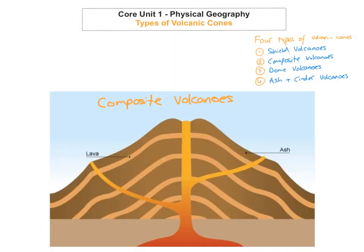The next one we're gonna look at is the composite cone — composite volcanoes. There are a few different features for composite volcanoes. The first one is that they have alternating layers of ash and cinder and lava. You can see here the cinder and ash layer, then the lava layer, then ash and cinder, then lava — alternating like that throughout. The slopes are completely different to shield volcanoes because they're very, very steep.